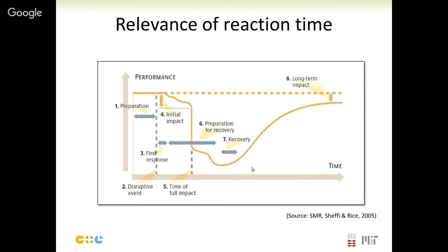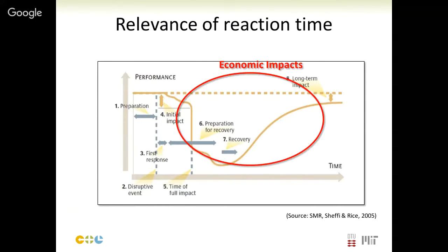This is a qualitative description of how a company reacts to a disruption. The economic impacts lie in the area throughout the time when we are operating below the expected performance level. The quicker we react, or the less the disruption affects our performance, the better the economic outcome. The idea is to reduce the area beneath this curve so performance stays at expected levels as much as possible. Reaction time is a relevant factor for company performance.